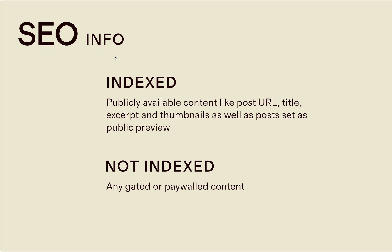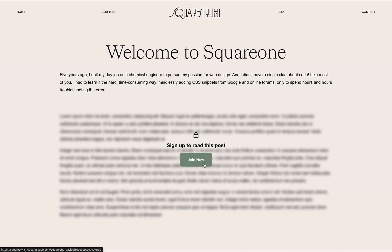A quick note about SEO: any content that is made publicly available — for example, excerpts, thumbnails, titles, URLs, as well as full post content that is set for public preview — will be indexed accordingly. But any paywalled content will not be indexed.